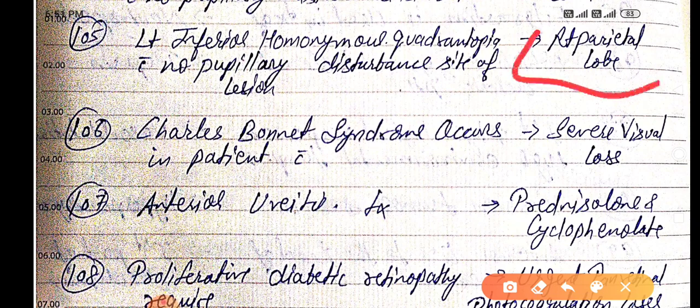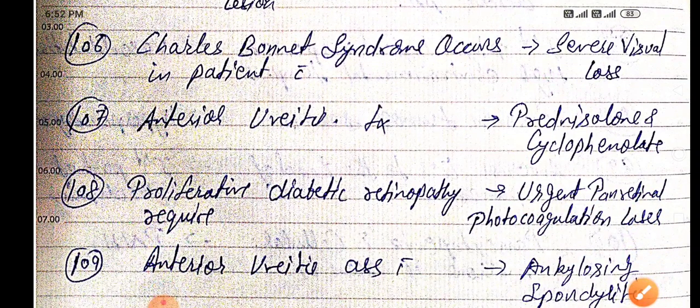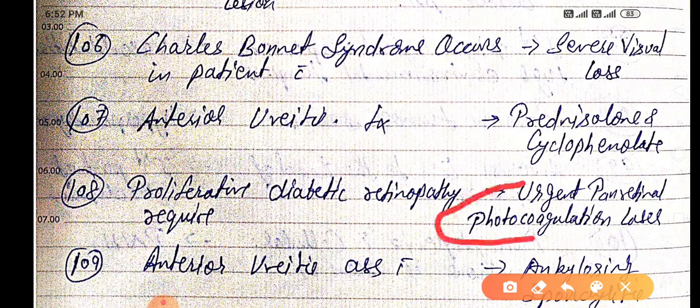Charles Bonnet syndrome occurs in a patient with severe visual loss. Anterior uveitis treatment is with prednisolone and cyclopentolate. Proliferative diabetic retinopathy requires urgent laser panretinal photocoagulation.